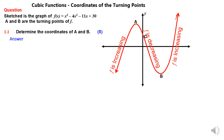So the graph is increasing, then decreasing, and then increasing. At point A, which is the turning point, and at point B, which is also the turning point — these two points we call them turning points, or the local maximum or local minimum. We also call them stationary points.